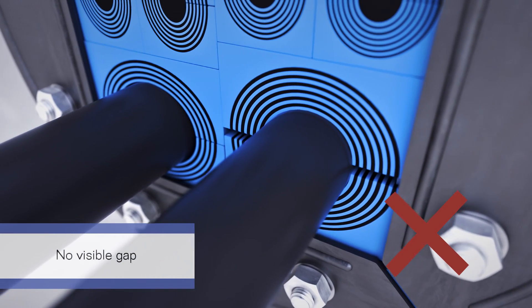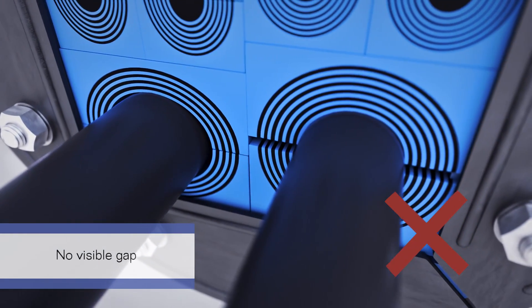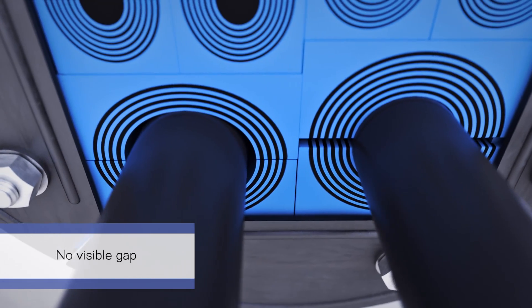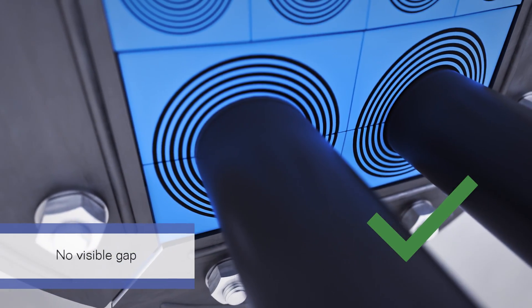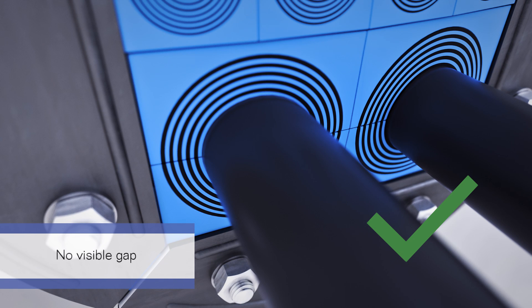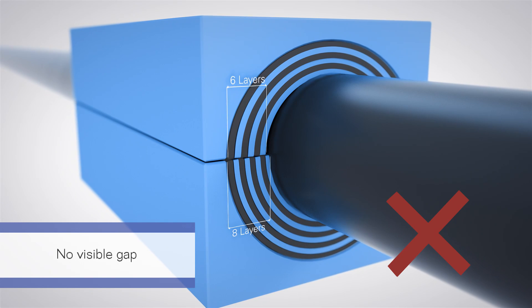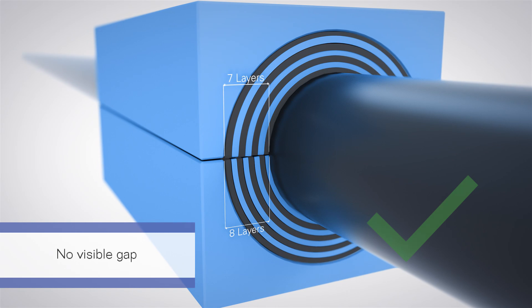Check that there is no visible gap after compression, neither between the cable or pipe and the module, nor between module halves or between the modules and the frame. The peeling of the module halves may not differ by more than one layer.